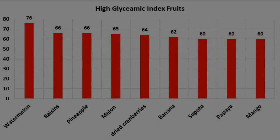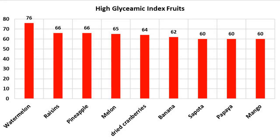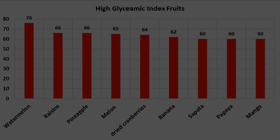Now I will show category 1 — which fruits are the high GI fruits. These are 10 fruits: watermelon, raisins, pineapples, melon, dried cranberries, banana, sapodilla, papaya, and mango. Out of which watermelon is the highest with a GI of 73.